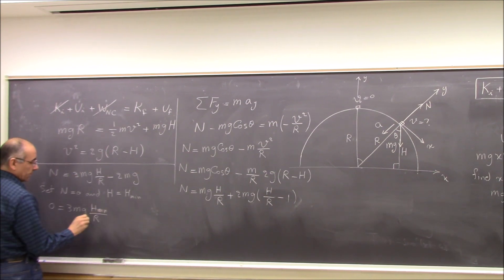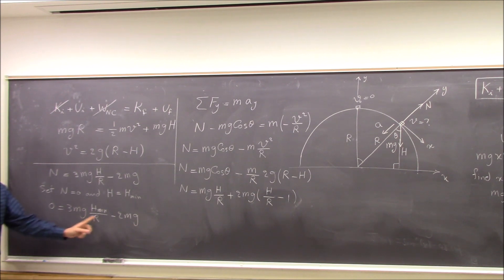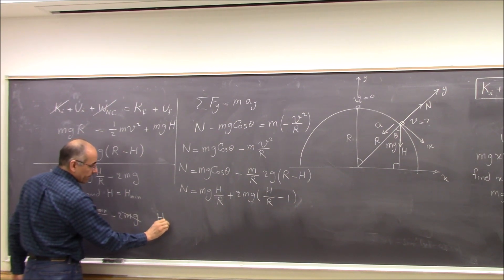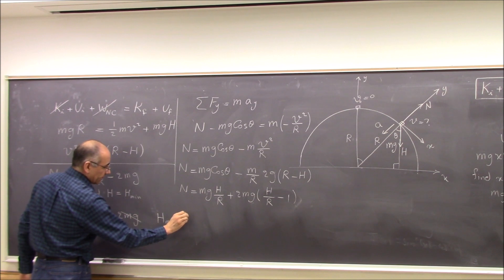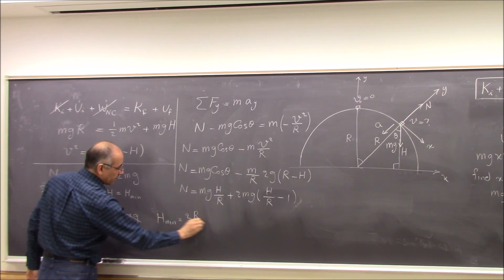It's all for H minimum. If Mg cancels, this two comes here, multiplied by R divided by three. So H minimum will be 2R over 3.